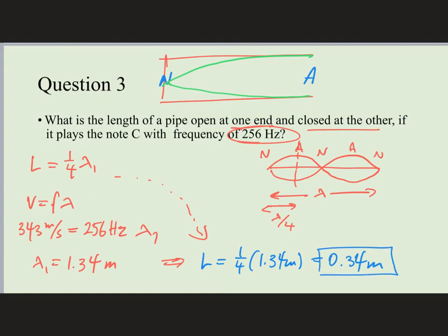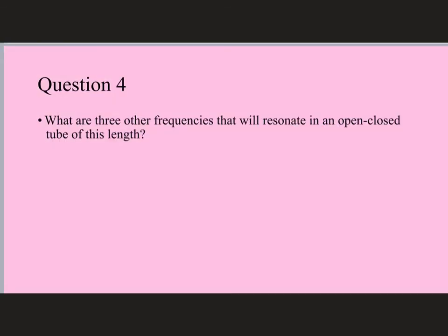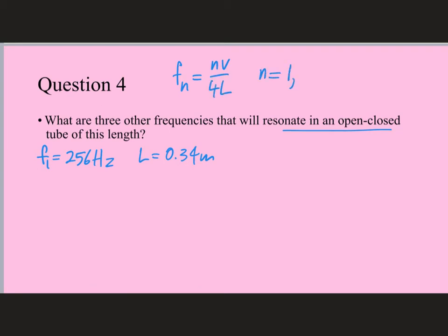We're looking at the fundamental, n equals 1, unless it specifies a different harmonic. If it just gives you the note played by the tube, that note is the fundamental. It turns out the harmonics for a pipe closed at one end are NV over 4L, where N is allowed to be only 1, 3, 5, 7, and so on — only the odd integers.